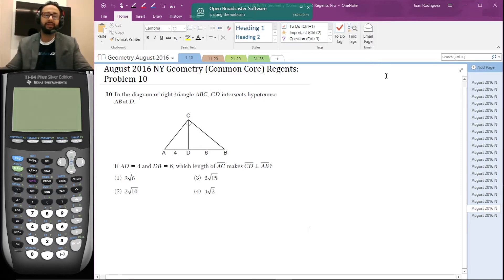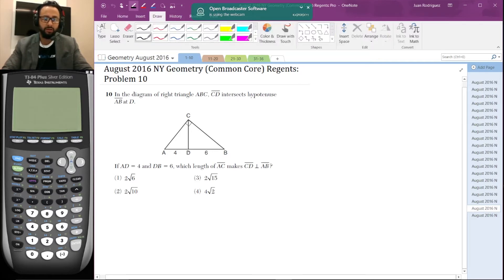Click on the appropriate tabs. So here's the problem. In the diagram of right triangle ABC, CD intersects the hypotenuse AB at D. Okay, so that looks to be true. This looks like a right triangle. So everything looks to be drawn to scale. Now if AD is 4 and DB equals 6, which length of AC makes CD perpendicular to AB.